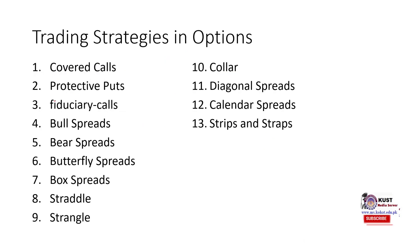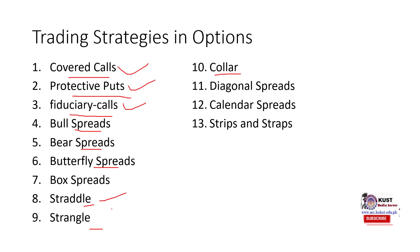So there are a few of these strategies: covered call, protective put, fiduciary call, bull spread, bear spread, butterfly spread, straddle, strangle. As you can see there are multiple strategies — this list is not exhaustive. We are going to cover covered call, protective put, fiduciary call, straddle, strangle, and we might also cover bull spread and bear spread — around five or six strategies in this chapter.